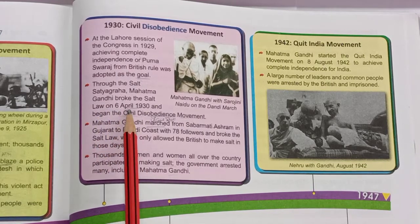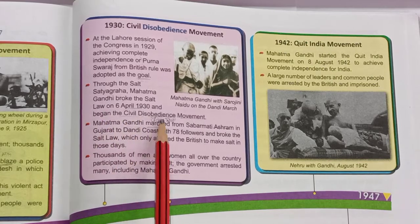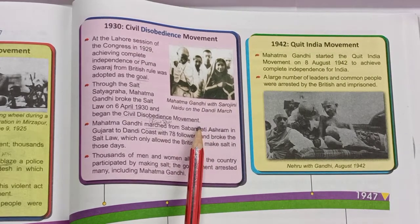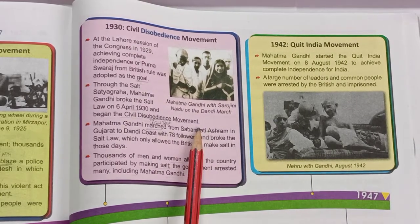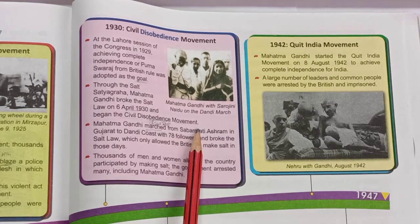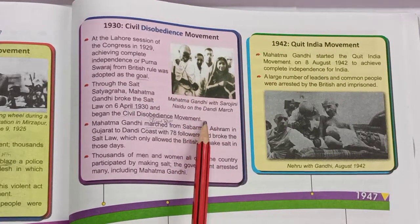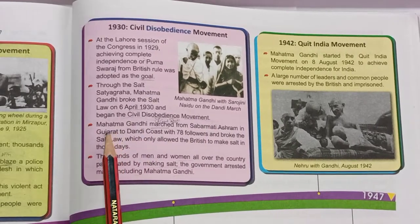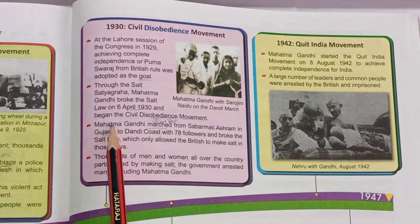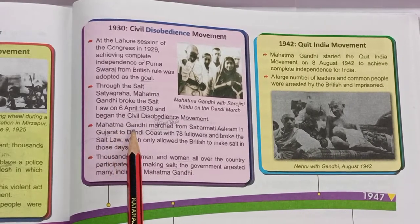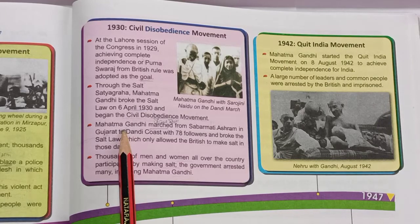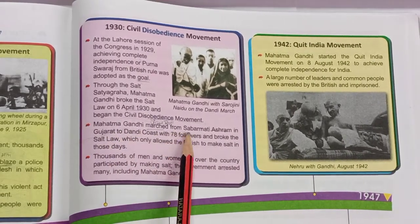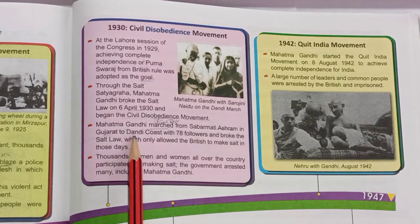On 6th April 1930, Gandhi began the Civil Disobedience Movement through the Salt Satyagraha. At that time, the British salt law said that only the British could make salt — common people could not. Mahatma Gandhi broke this salt law by making salt himself to show the people how to do it. He marched from Sabarmati Ashram in Gujarat to the Dandi coast.